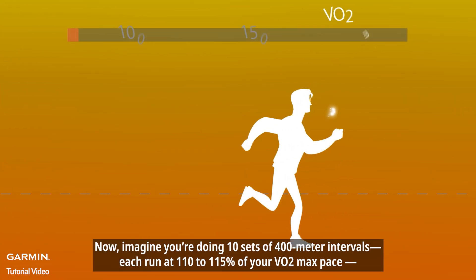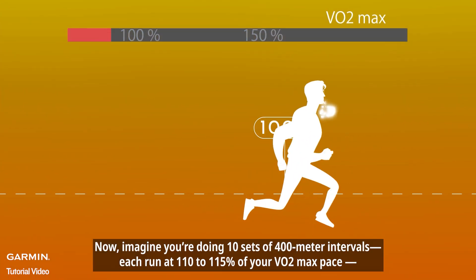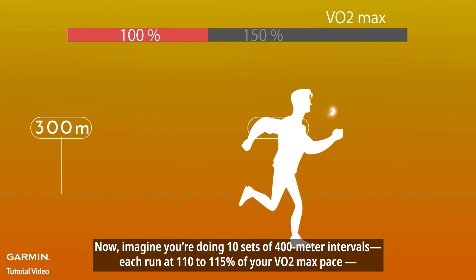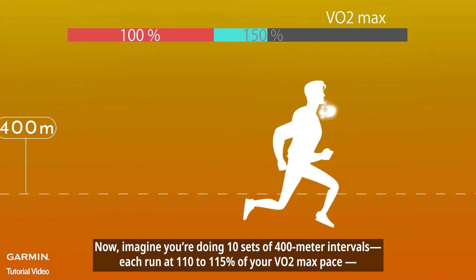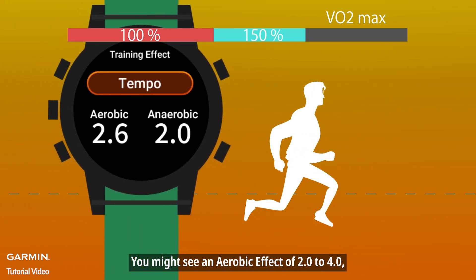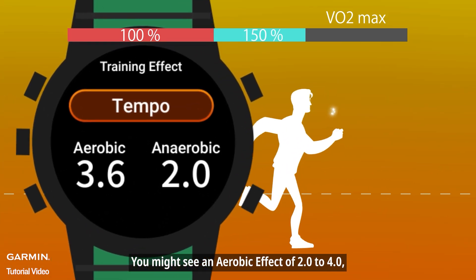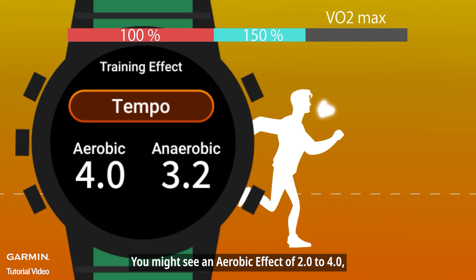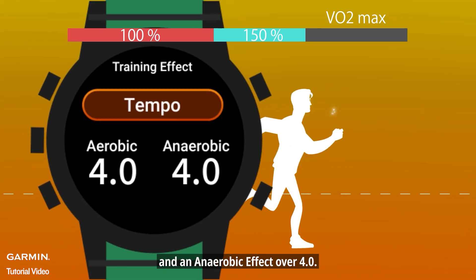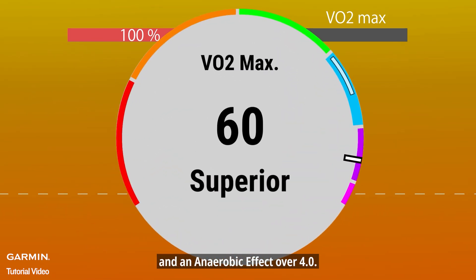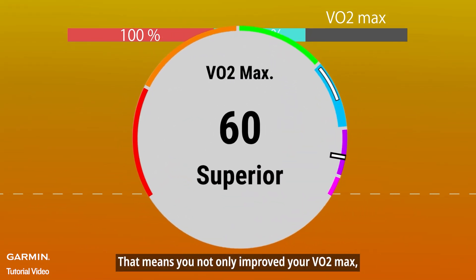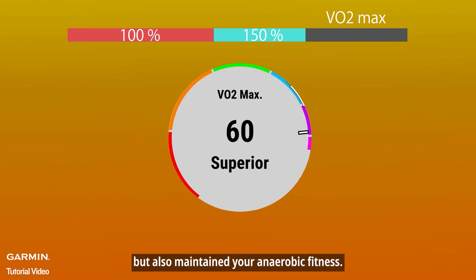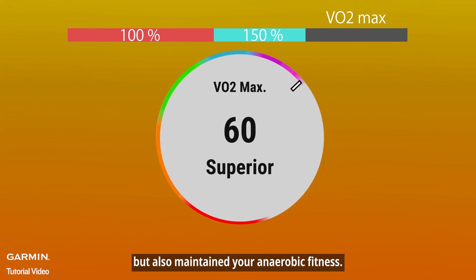Now, imagine you're doing 10 sets of 400-meter intervals, each run at 110–115% of your VO2 max pace. You might see an aerobic effect of 2.0 to 4.0 and an anaerobic effect over 4.0. That means you not only improved your VO2 max, but also maintained your anaerobic fitness.